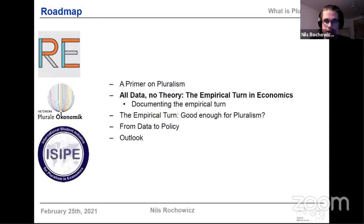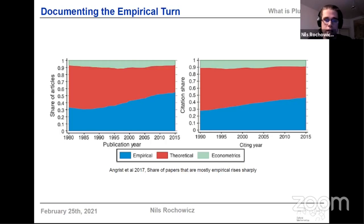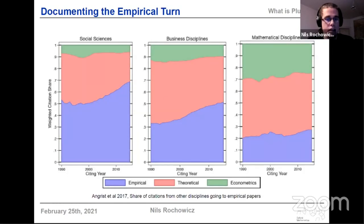What I want to do now is document this empirical turn briefly. On the left side, we see that for any publication year, the share of papers in economics that are empirical, theoretical, and econometrics papers — blue representing the empirical papers — has increased really substantially from 1985 to 2015: by maybe around 25%, so a quarter more papers are empirical now than they were back in the day. And on the right side, we can see that empirical papers are also steadily getting cited more.